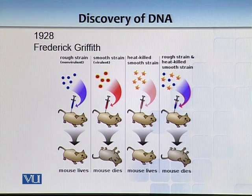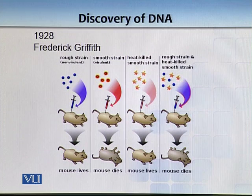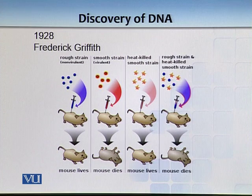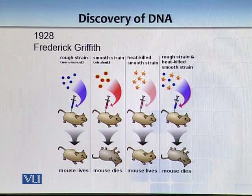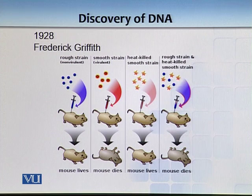In the first experiment, when mice were injected with the rough non-virulent strain, they did not die. But when injected with a smooth strain, the mouse died. This established which strain caused disease. However, when the smooth strain was heat-killed, the mouse lived — establishing that the heat-killed pneumococcus cannot cause disease.